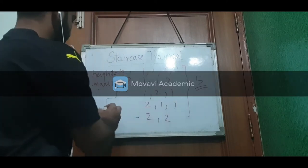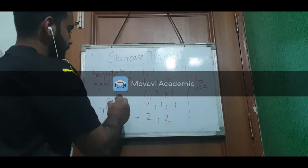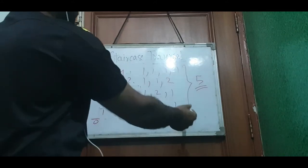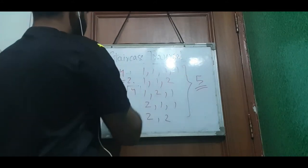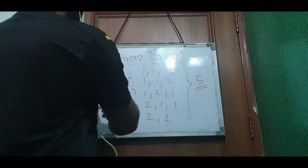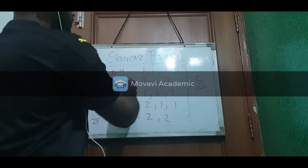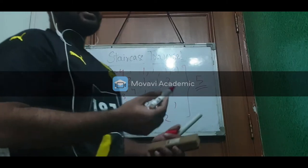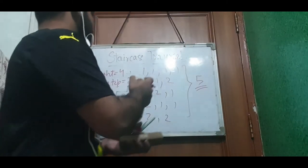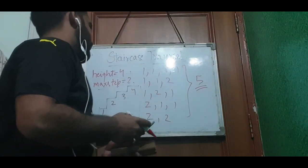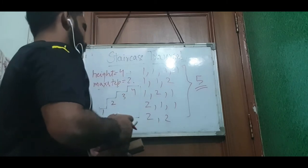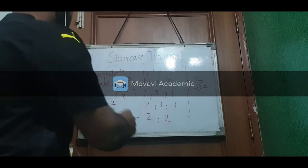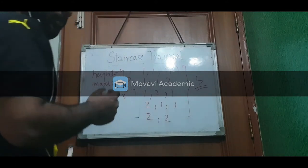So we can take 0, 1, 2, 3, or 4 steps as we go to the top, using a maximum step of 2 to climb this staircase of height 4. We'll be seeing how we find it using dynamic programming. For this problem we'll be looking at the number of ways in which we can climb each step.